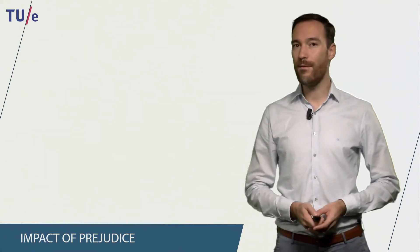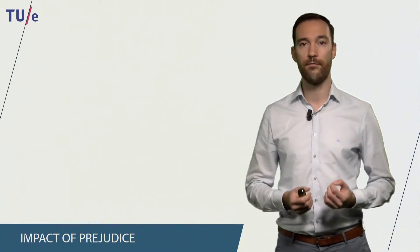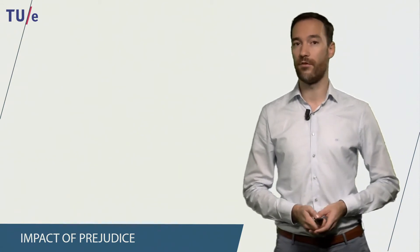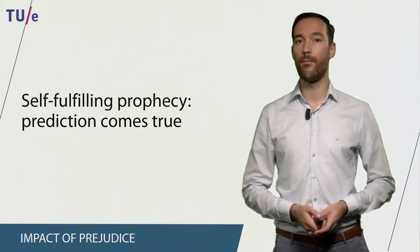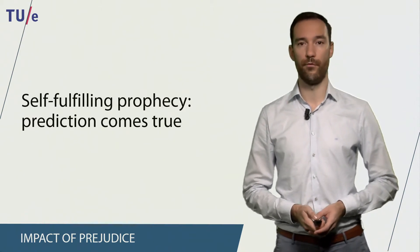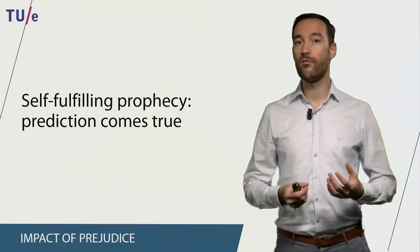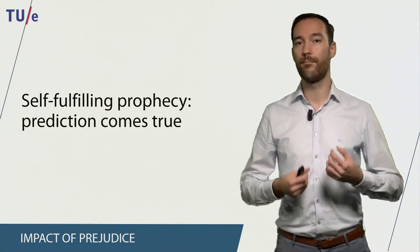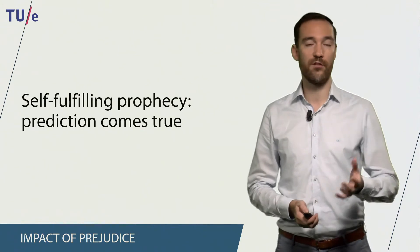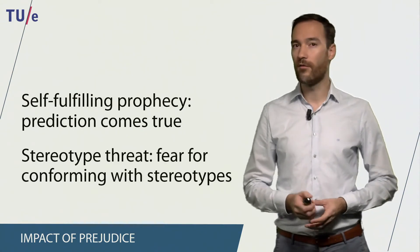When we think about the impact of prejudice or how it can influence our lives or our behavior, several theories can explain this. One of the most well-known is the self-fulfilling prophecy, or a prediction that makes itself come true. We tend to behave in ways that make us more likely for this prediction to come true.